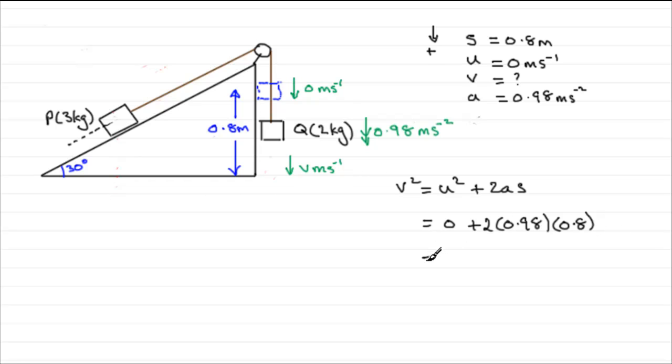Work this out and you should find that you get 1.568 exactly on your calculator. And then to get V, we need to find the square root of 1.568. And if you do that, you would end up with V equaling 1.252 and so on. Which, let's say we round it to one decimal place. Then, therefore, we have V equals 1.3 meters per second to one decimal place.